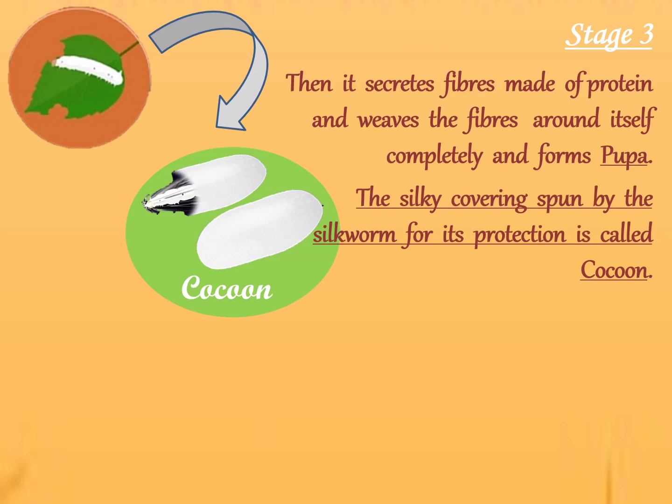Within 2 to 3 days, the caterpillar covers itself completely and forms a pupa. The silky covering spun by the silkworm for its protection is called a cocoon.